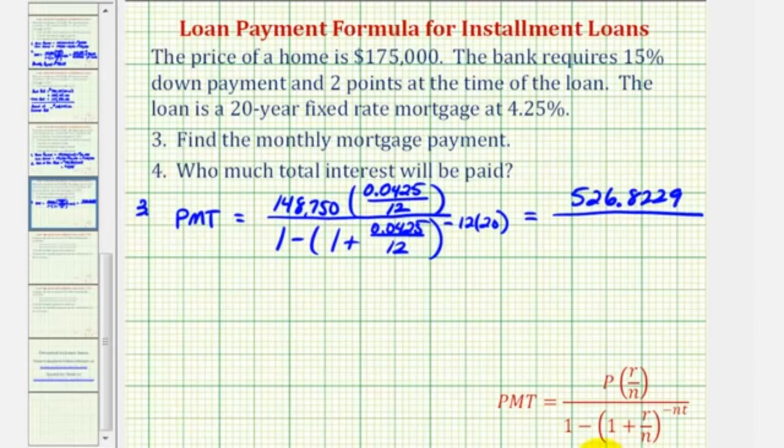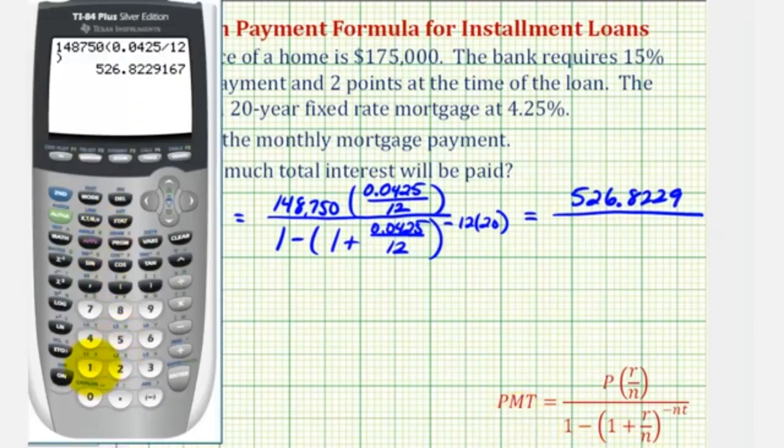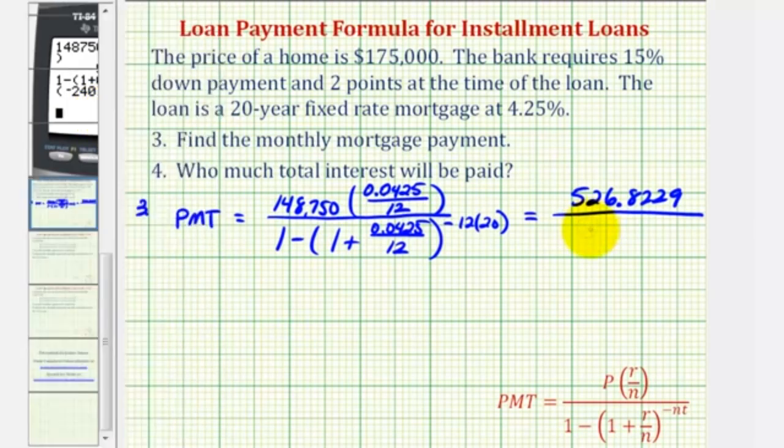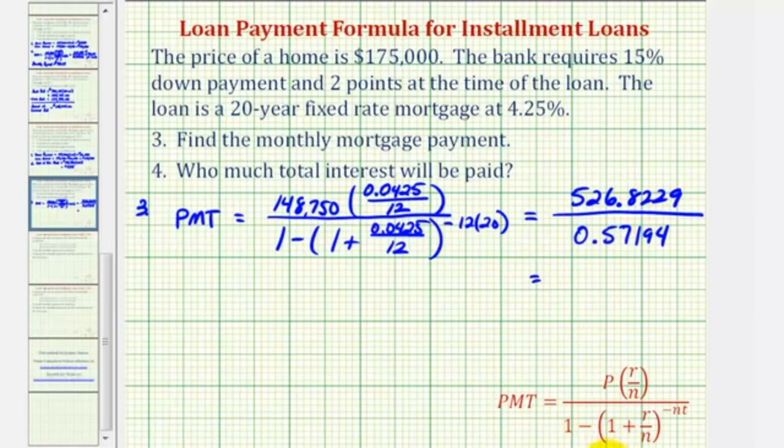And now for the denominator, we'll have one minus the quantity one plus 0.0425 divided by 12, raised to the power of negative 240. So we have approximately 0.57194. And now we'll find this quotient.